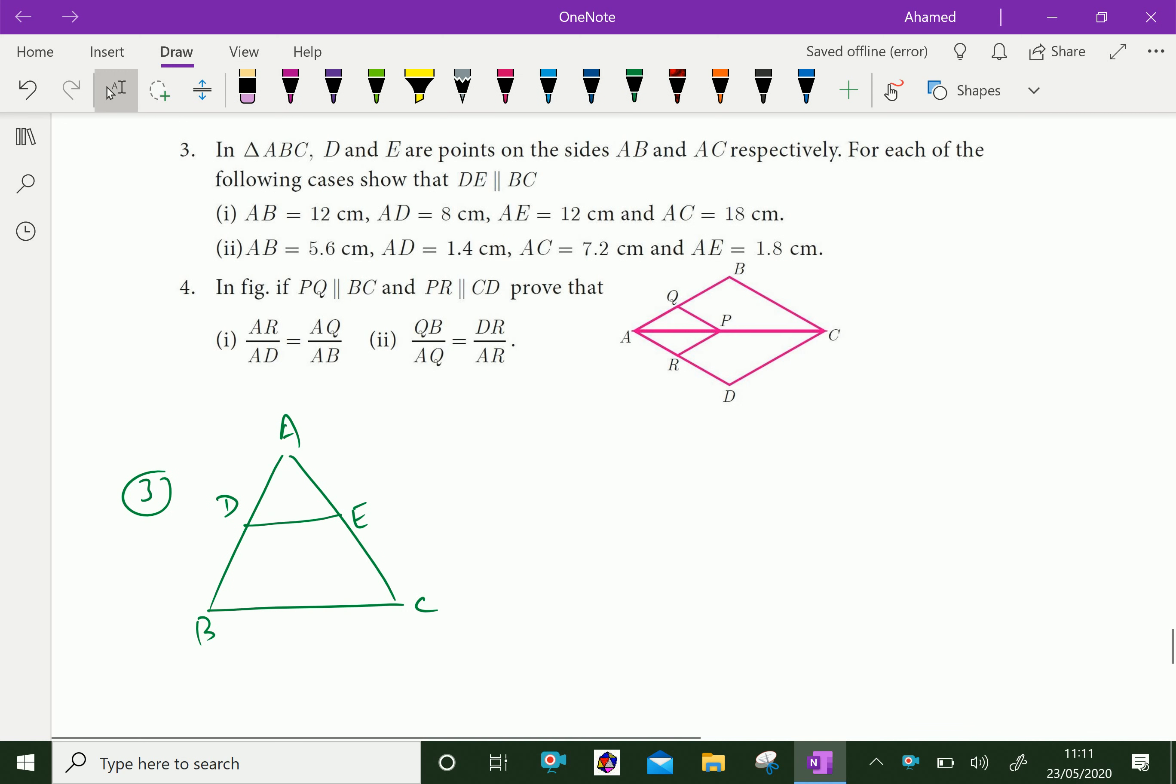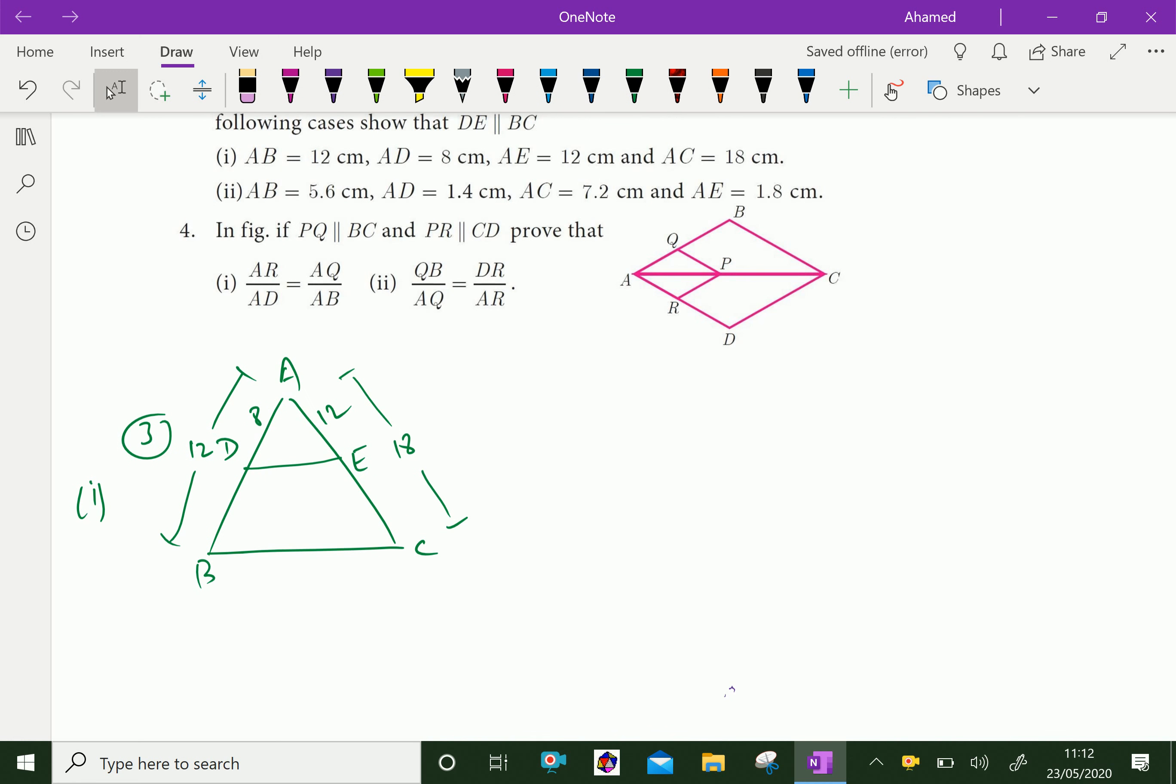Join them. Here, so that first question, AB is 12, AD is 8. AD is 8 and AE is 12. AE is 12 and AC is 18. AC is 18. Now, by Thales theorem, by basic proportional theorem.